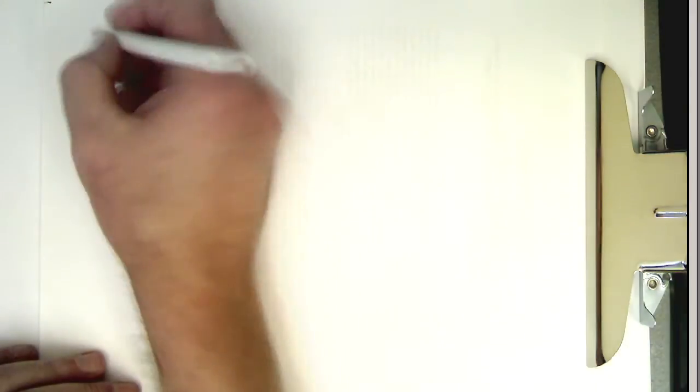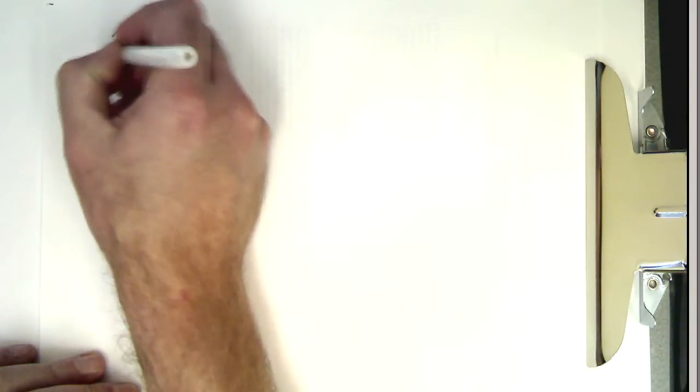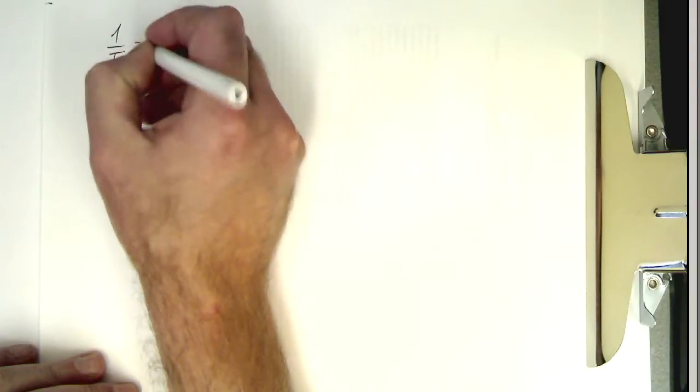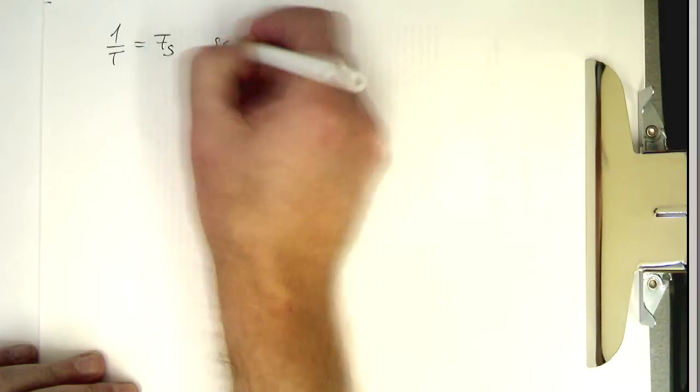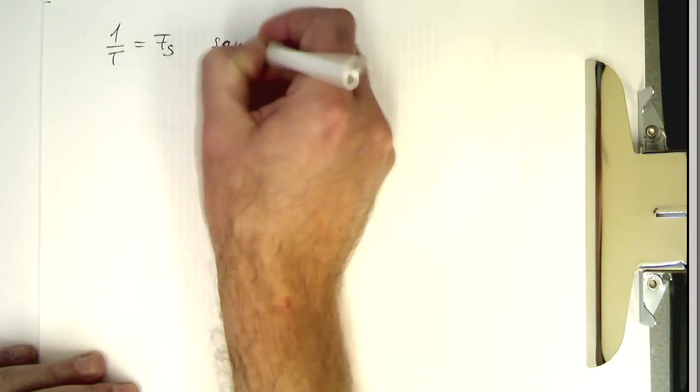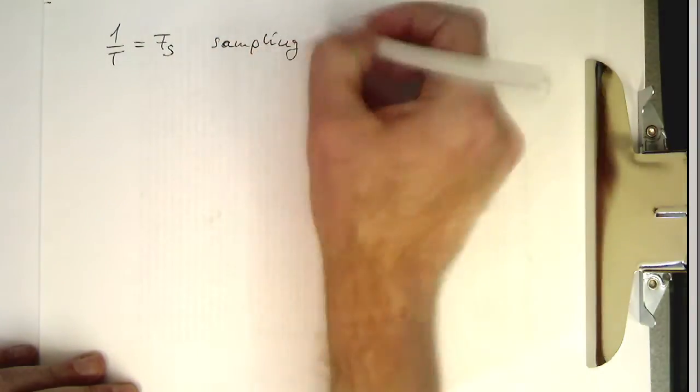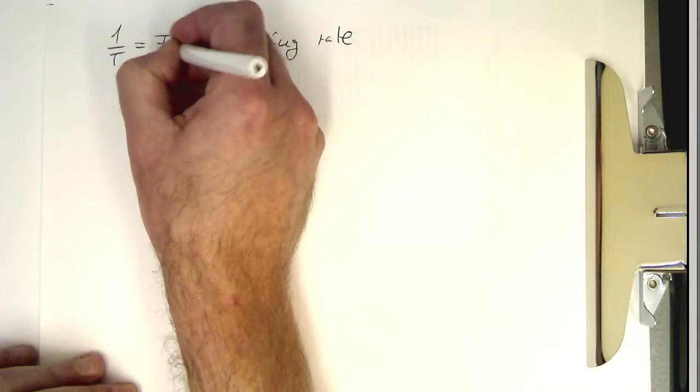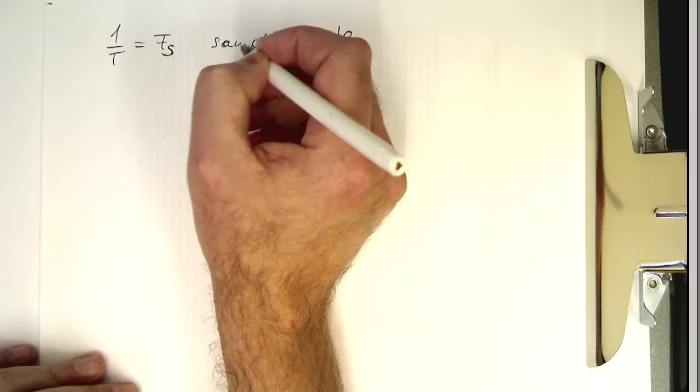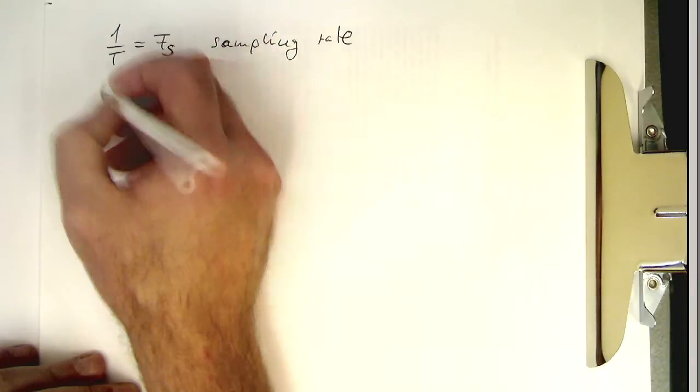So let's write this down again just to summarize this here. So 1/T equals Fs and that's our sampling rate. This was a bit squeezed at the bottom of the other page just to be sure that we've mentioned that.